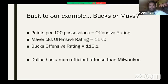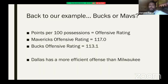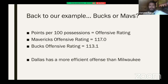Going back to our example — how many points is each team scoring per 100 possessions? This is the offensive rating. The Mavericks score 117.0 points per 100 possessions; the Bucks would score 113. So despite the fact that the Bucks actually scored more total points than the Mavericks, the Mavericks have a more efficient offense. The Mavericks have a better offense than Milwaukee because they score more per possession.